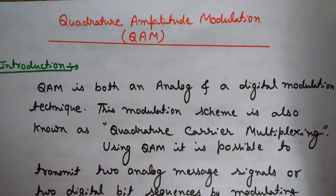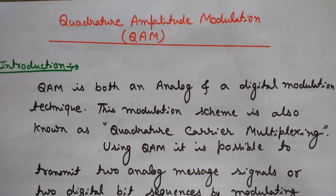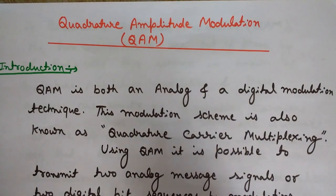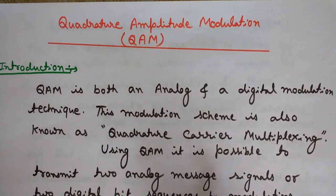Now let's come back to our topic — Quadrature Amplitude Modulation. We can use QAM with either analog signals or digital signals. If we use it with analog messages, we have two analog message signals and two carrier waves using amplitude modulation. With digital bit streams, we use ASK — Amplitude Shift Keying modulation.